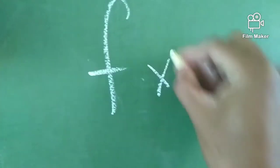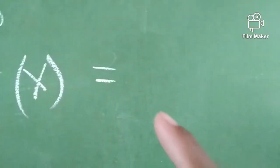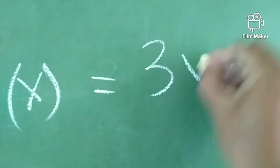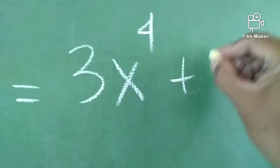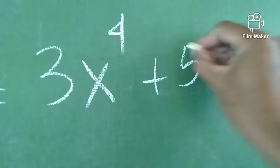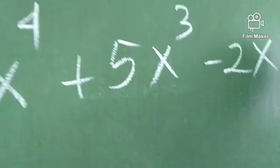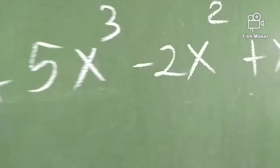It should be in descending form. What do we mean by descending form? Say for example, I'll arrange it now. So we have 3x to the 4th plus 5x cubed minus 2x squared plus x minus 7.